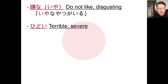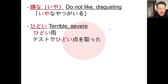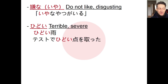Next we have hidoi, which means terrible or severe. You can say hidoi ame — the rain is really heavy. Or: tesuto de hidoi ten wo totta — I got a really bad score on the test. Ten wo toru means to get a score.